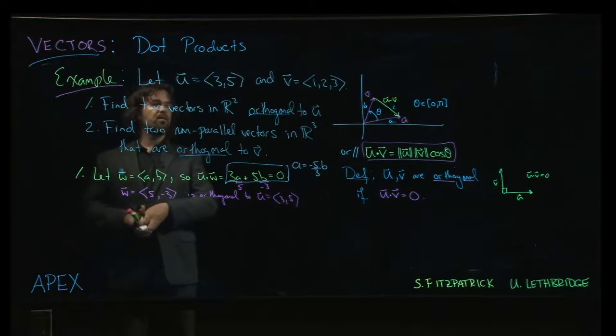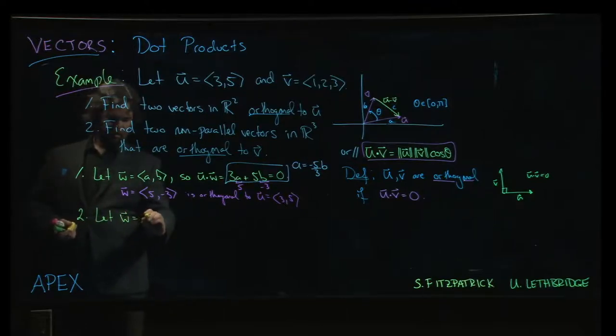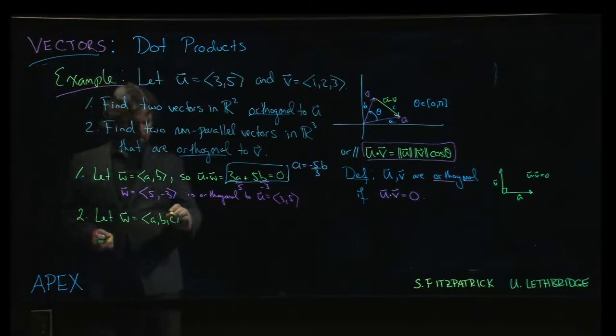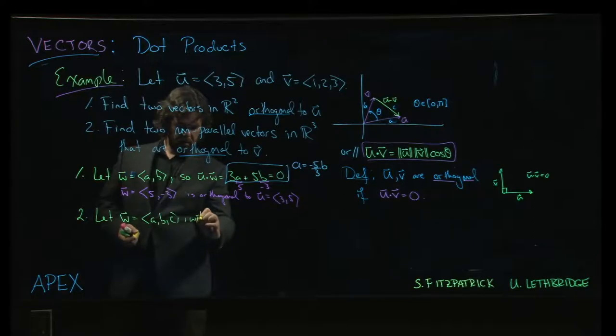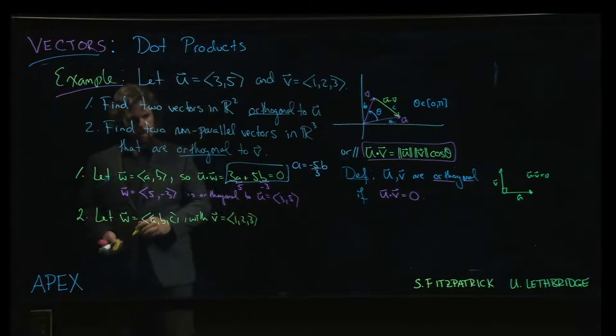But if we go to the three-dimensional example, let w in this case equal (a, b, c), and our vector v is (1, 2, 3).